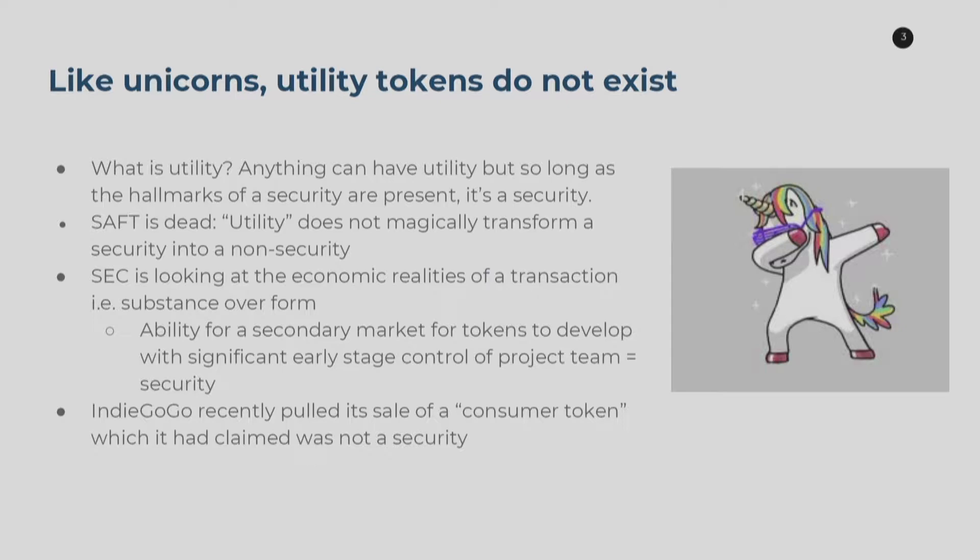The SEC, especially in the Munchee enforcement letter, has said they look at substance over form — the economic realities of a transaction. If it smells like risk capital, like people are looking to make money, then it's a security and there should be investor protections and disclosures under the Securities Act. Consumer tokens and Indiegogo's pivot into that area haven't worked — Indiegogo had to pull their consumer token sale recently.